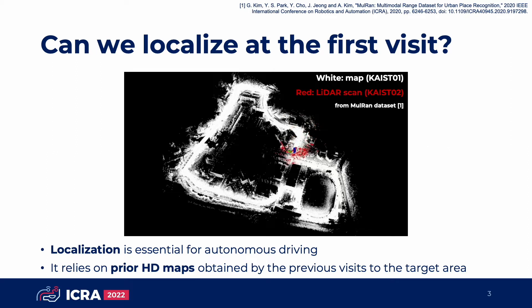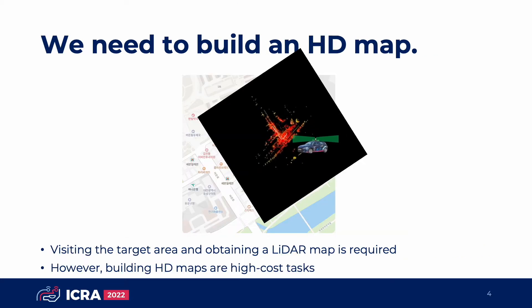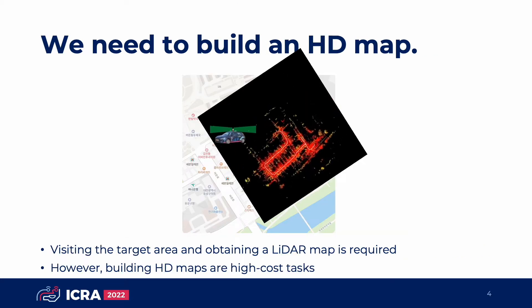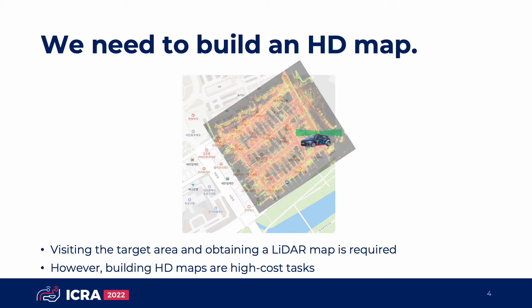Localization is essential for autonomous driving. Usually, it relies on prior HD maps built with LiDAR. But what will happen when the vehicle faces a new place where an HD map is not built yet? Maybe it fails to localize. We need to build an HD map of the target place by visiting there before. However, building HD maps everywhere is impossible.